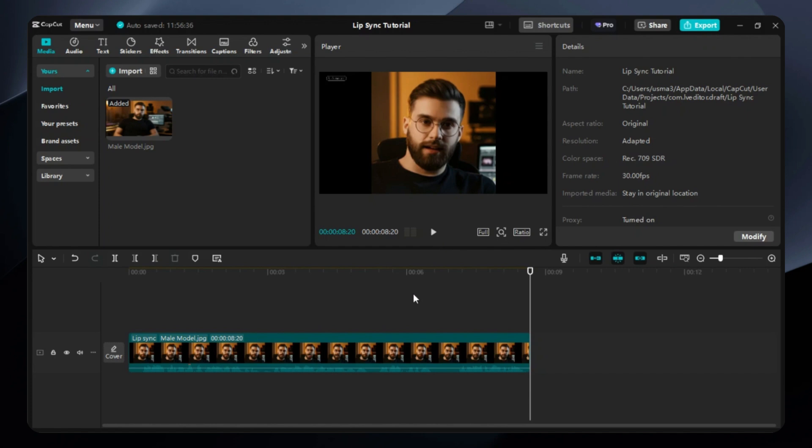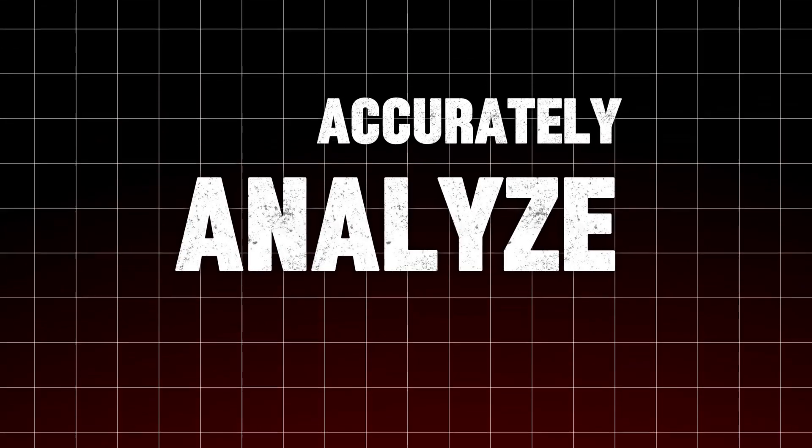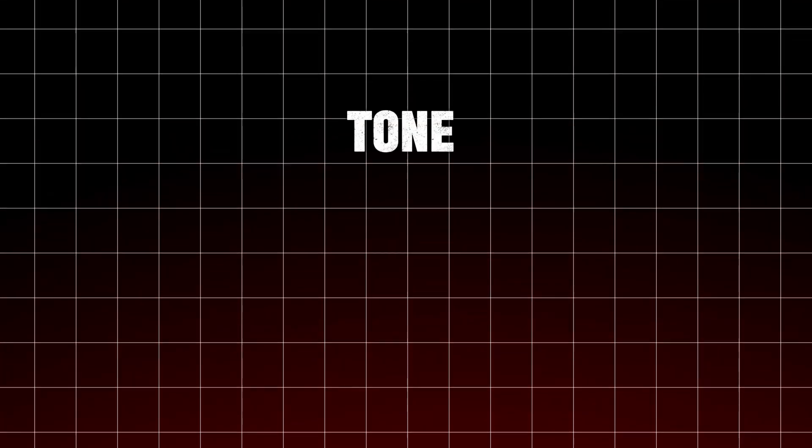Here are a few tips for using the Lip Sync feature in CapCut. Clear audio: ensure that the audio track you're using is clear and easy to understand — this will help CapCut accurately analyze the audio and generate appropriate lip movements. Voice selection: if you are using text-to-speech, choose a voice that matches the character's personality and the tone of your video.